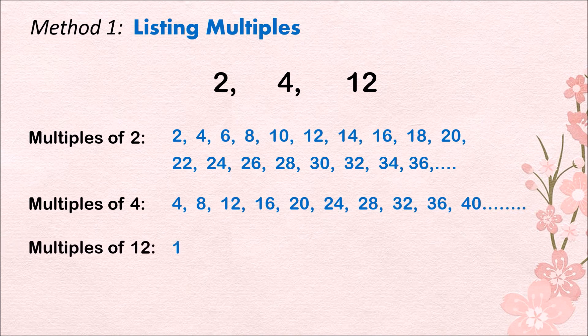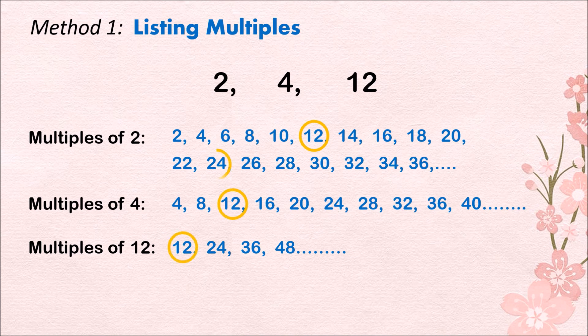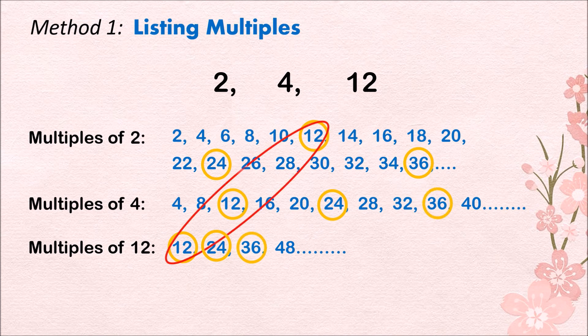The list of multiples for 12 are: 12, 24, 36, 48, and more. Now let's circle all the common multiples — we have 12, 24, and 36. Among these three, the smallest is 12. Therefore, the least common multiple of 2, 4, and 12 is 12.